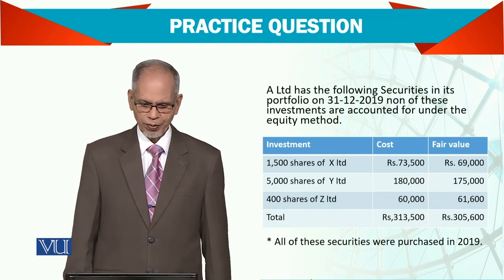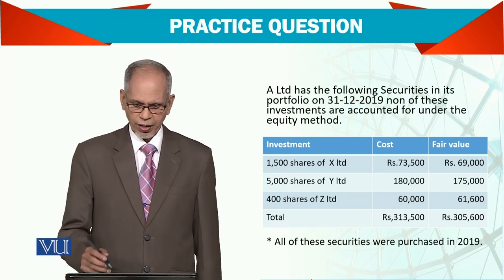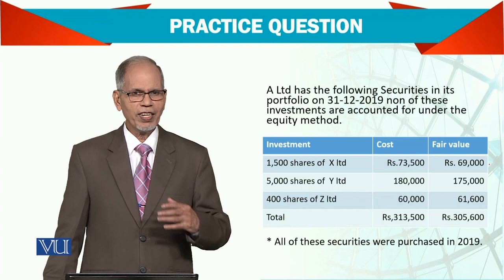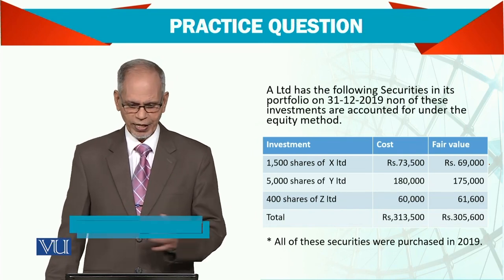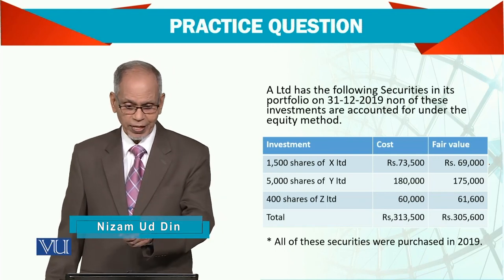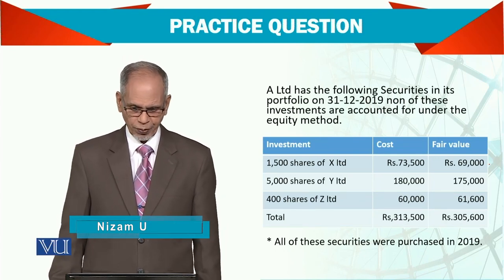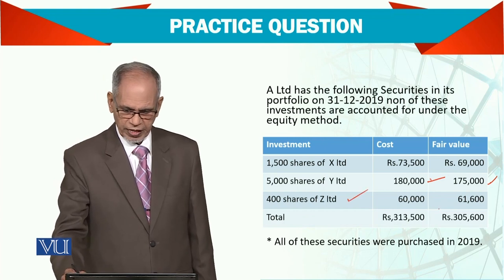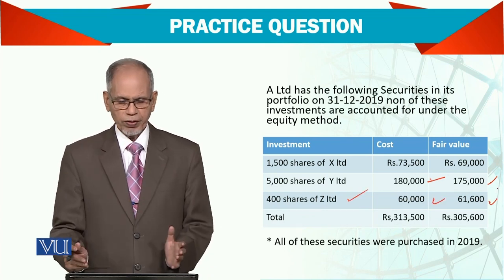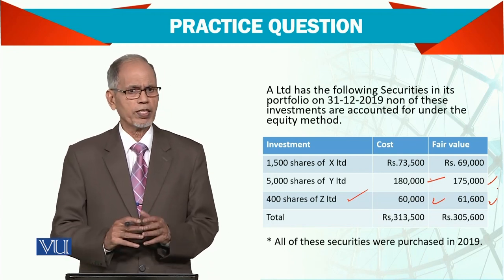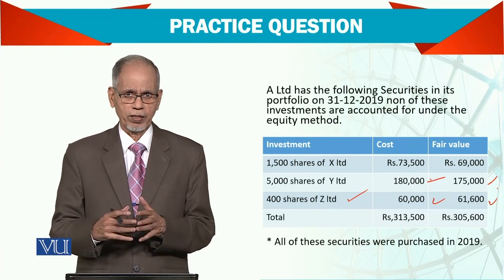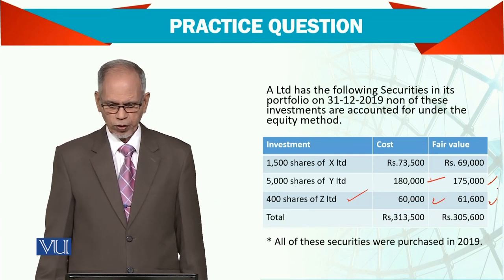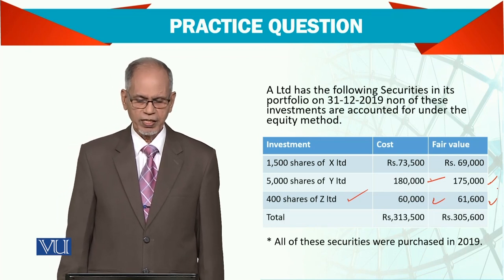Here there are 3 assets of A Limited. 1500 shares of X, cost is 7500 and fair value is 69. Because prices fluctuate on a daily basis, it keeps changing and we are talking about a measurement date of 31st December 2019. Similarly we have Y shares with fair value, and Z shares with fair value. The total cost is 313,500 and fair value is 305,600. All these securities were purchased in 2019.